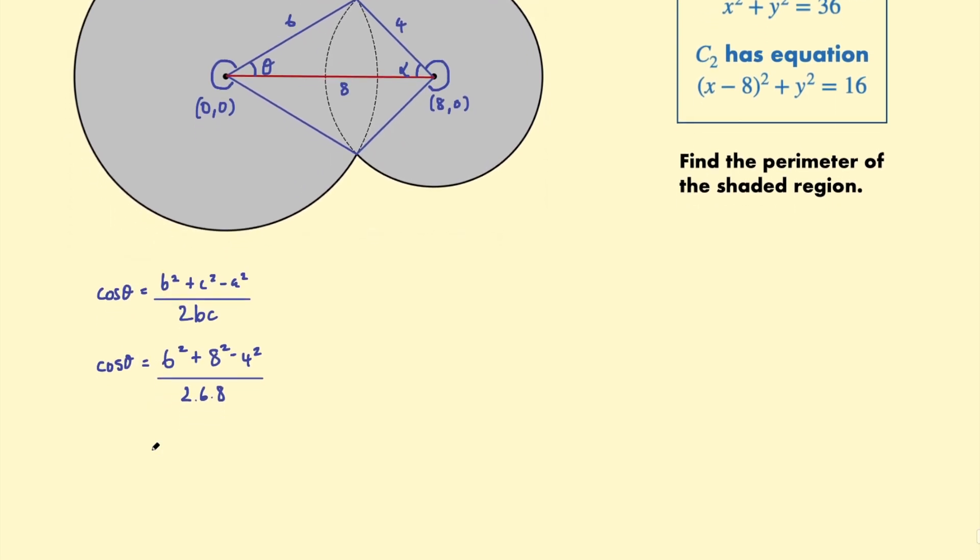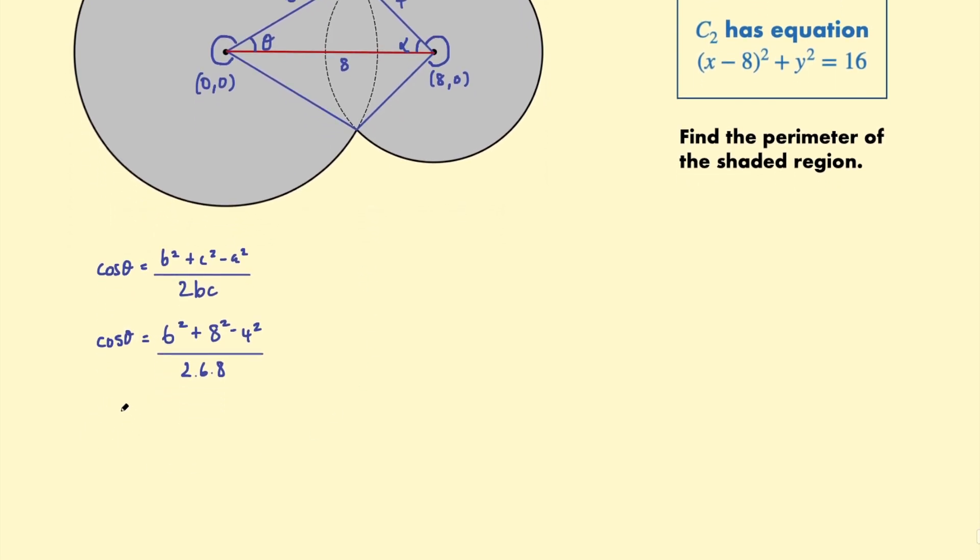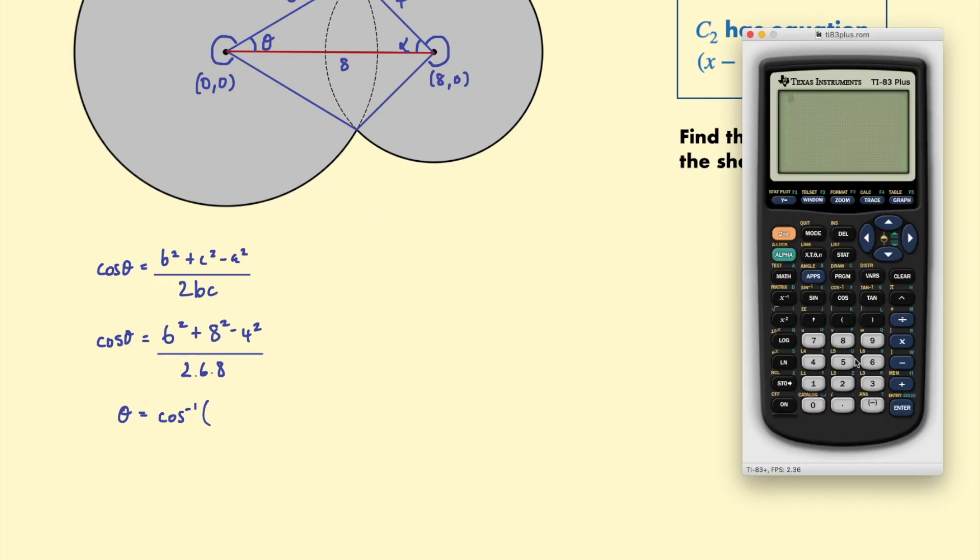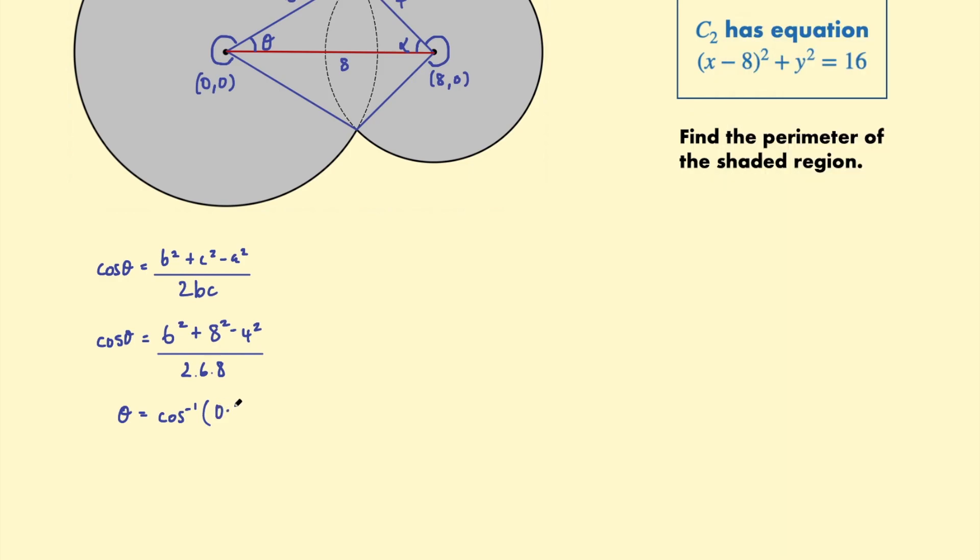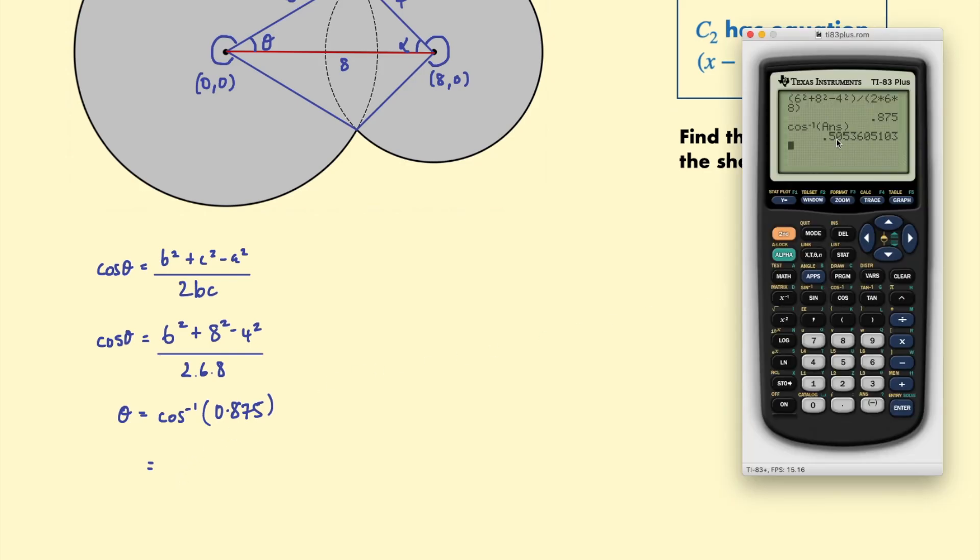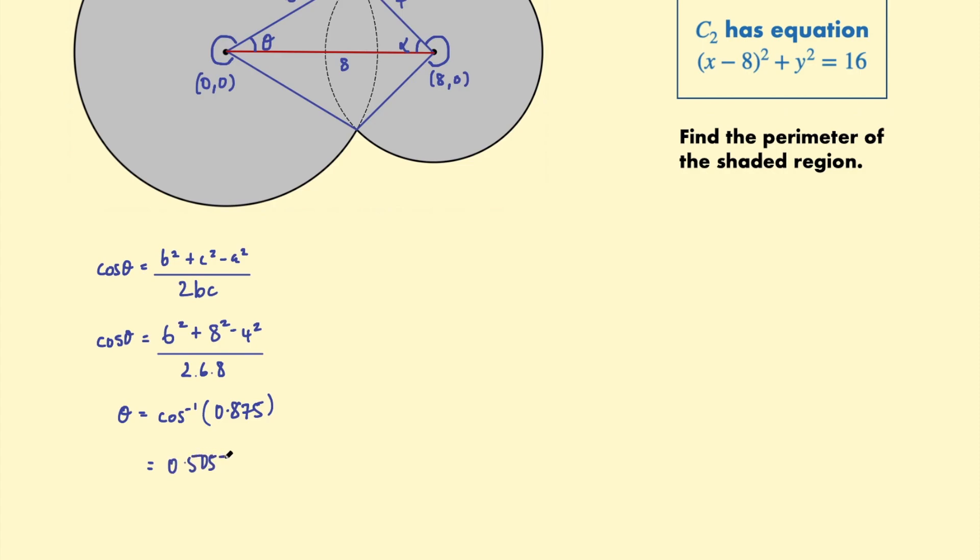So then we can find the angle using the inverse cosine. So theta is going to be the inverse cosine of this whatever this is. So let's go ahead and plug that into a calculator. So it's going to be the inverse cosine of 0.875. So let's go ahead and work that out. That is 0.50536 and so on. Okay so we have that angle theta that was that one.